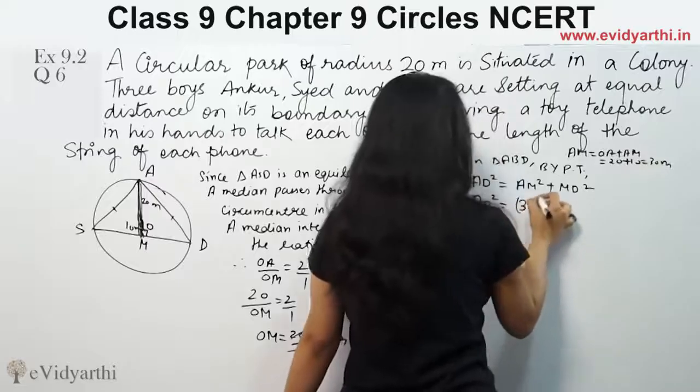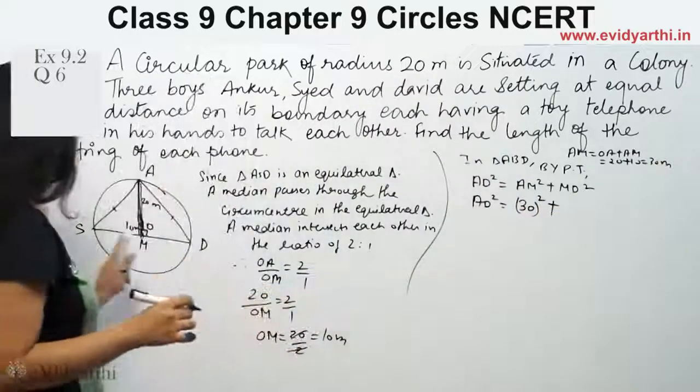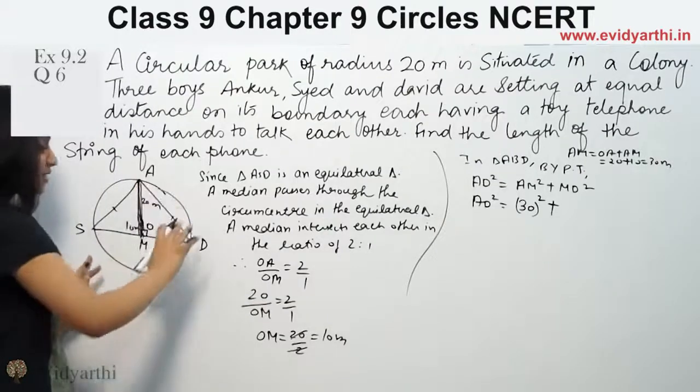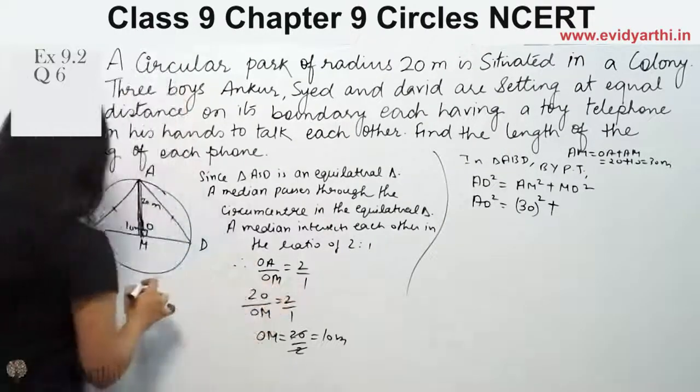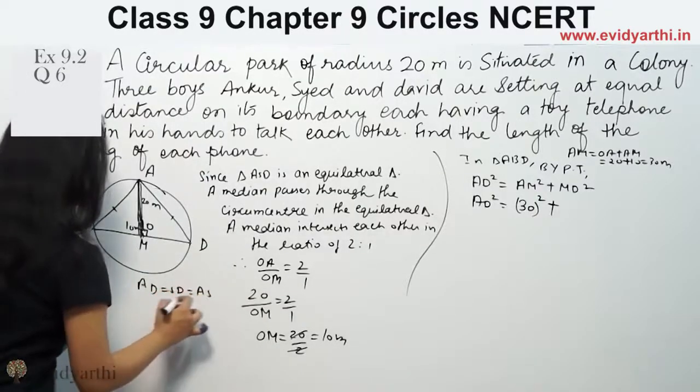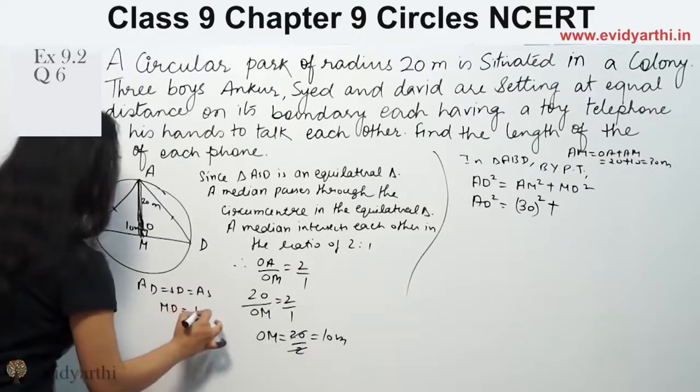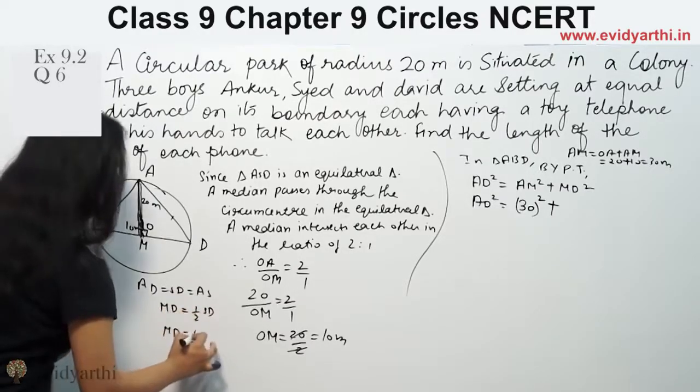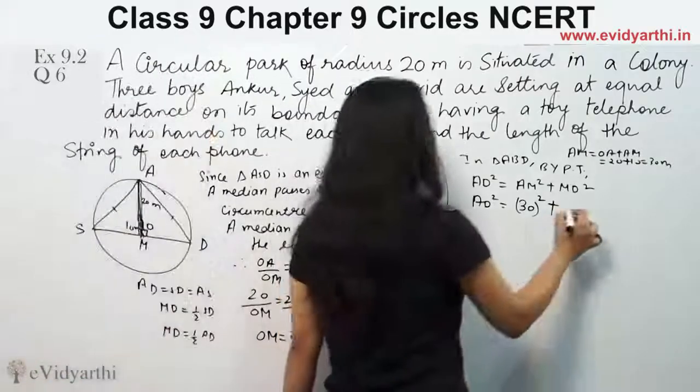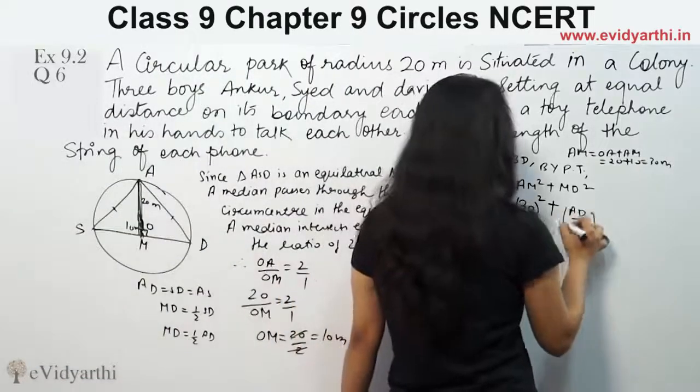So this is 30 squared. Now MD - MD is half of SD. And all sides are equal. So you can say that MD is half of AD. All sides are equal: AD equals SD equals AS. So if MD is half of SD, MD will be half of AD. All sides are equal. So here we get AD by 2 squared.